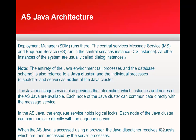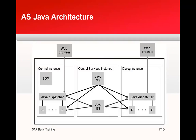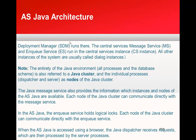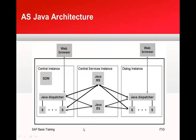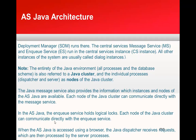In the Java architecture, SDM — the Software Deployment Manager — runs at the bottom. The central services contain the message service and enqueue server, which run in the central instance. The dialog instance has just a Java dispatcher. Importantly, the entirety of the Java environment — all processes and the database schema — is referred to as a Java cluster. This does not mean an HA cluster; rather, all components as a whole are called a cluster.